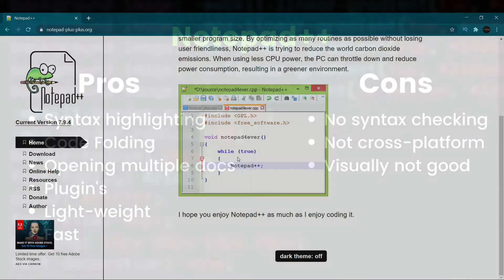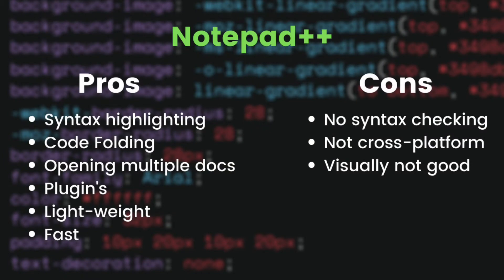For pros, the first thing is syntax highlighting — when you type code in Notepad++ and save the file, all syntax will have a different color. Whether you create a function, open an HTML tag, or add an attribute, it gets a different color. The second pro is code folding. Third, you can open multiple documents at the same time. Fourth, it is very lightweight and fast. Fifth, you can install multiple plugins to help you code better and faster.